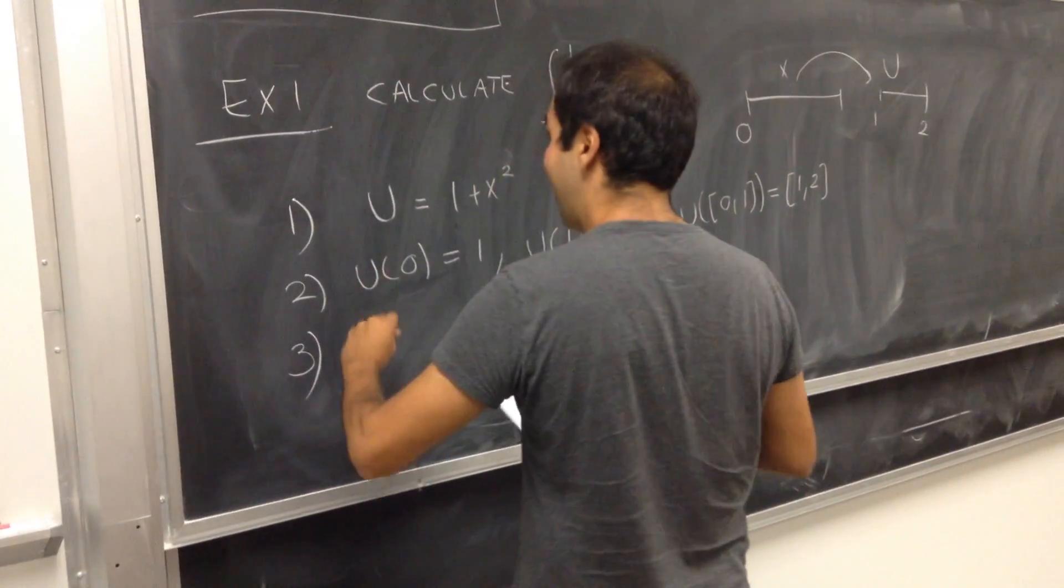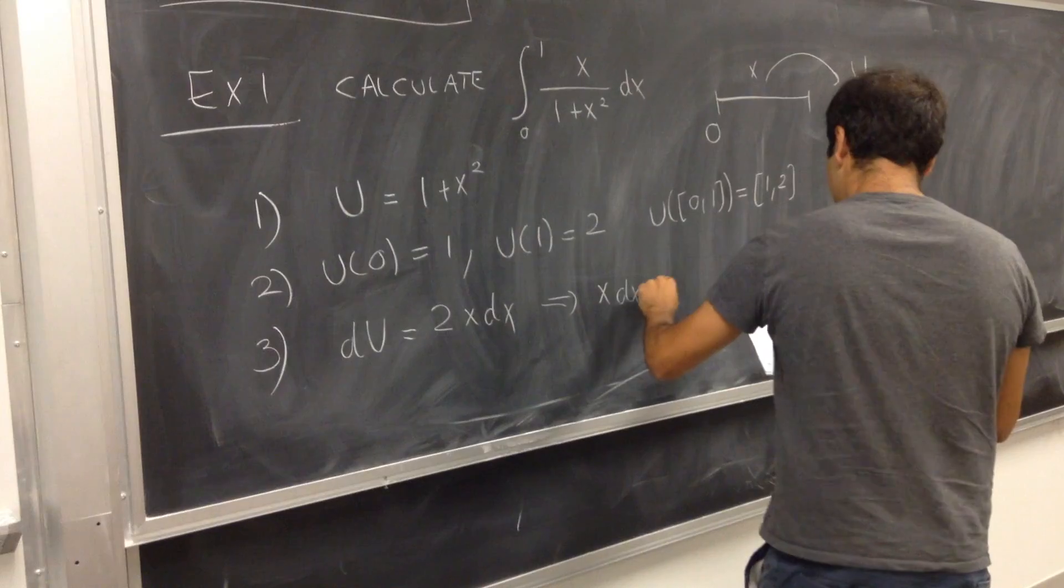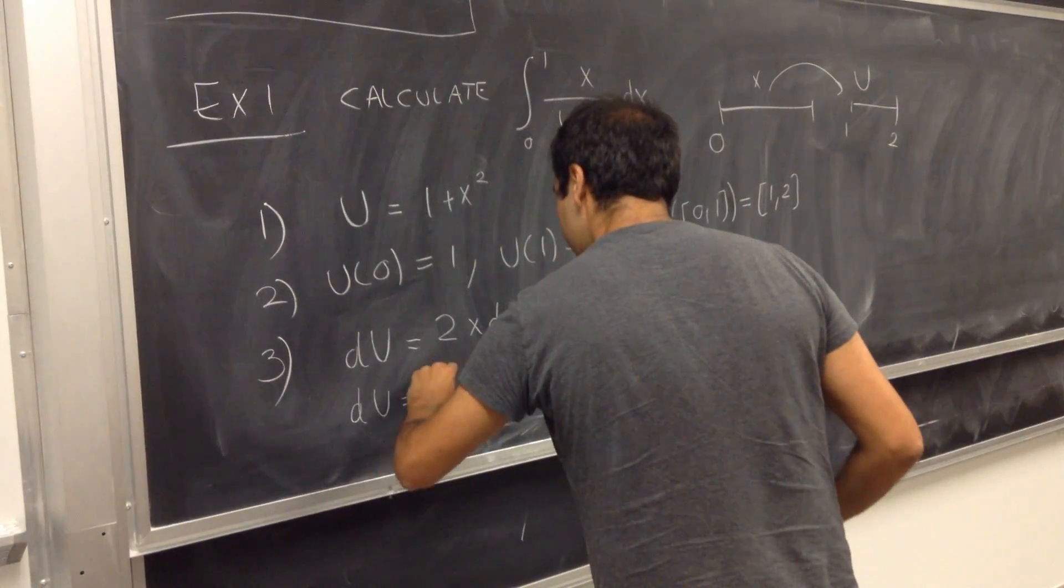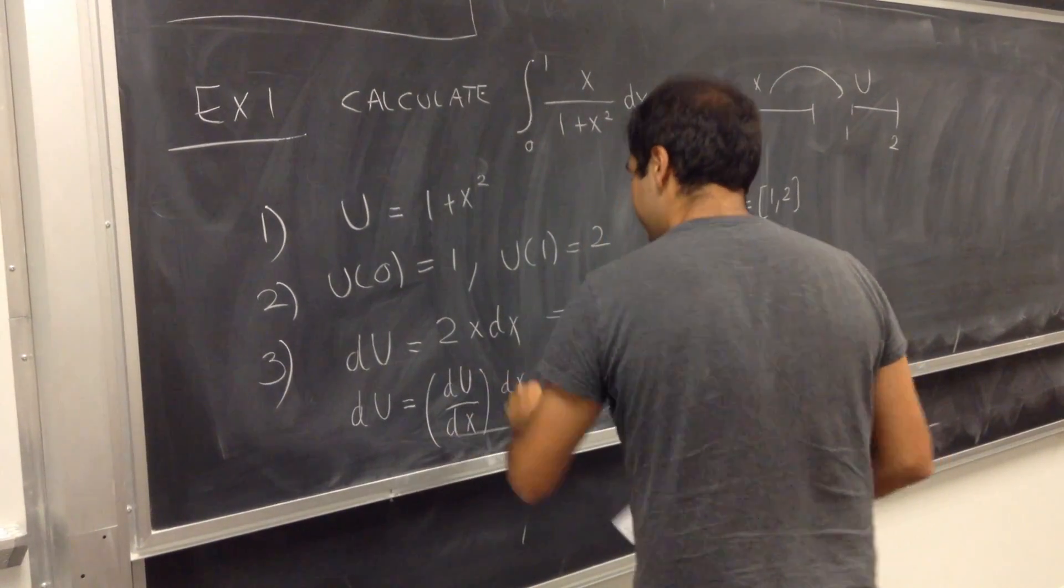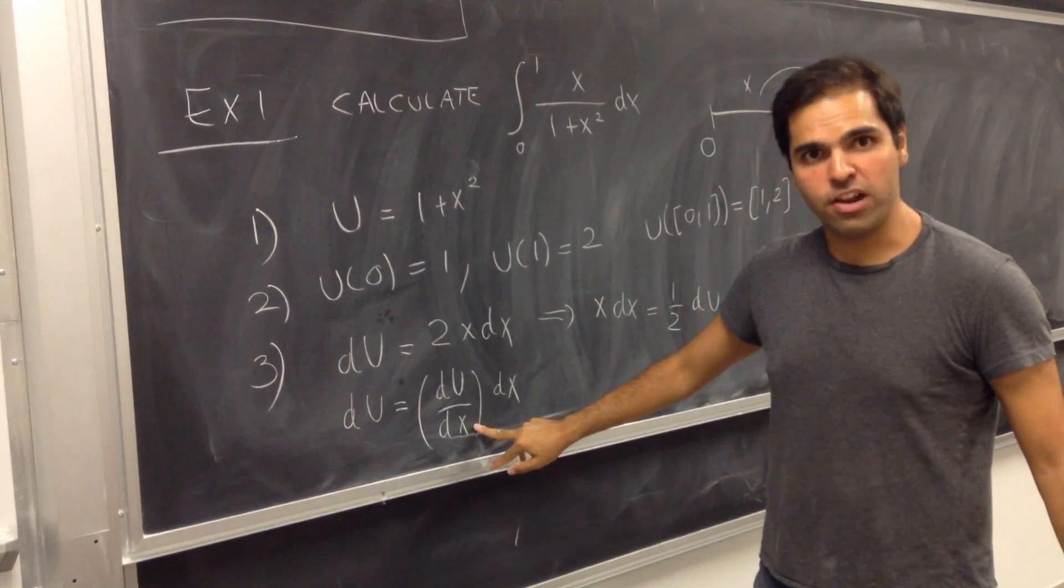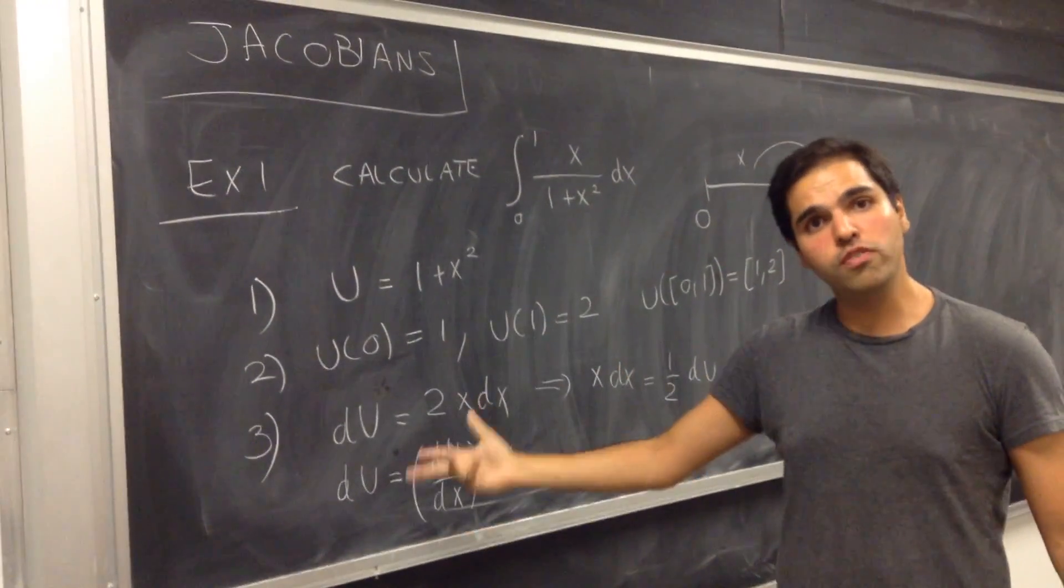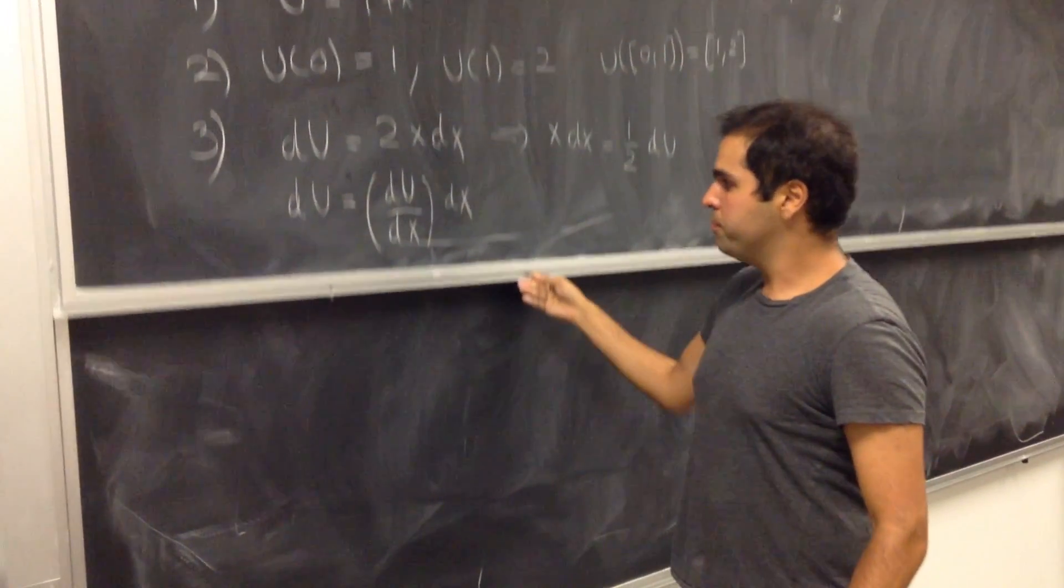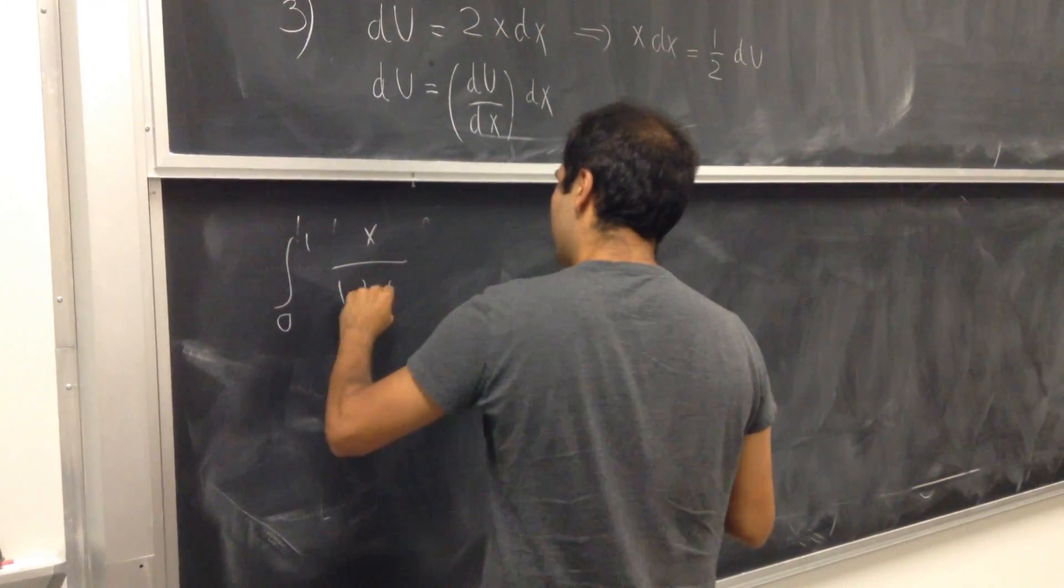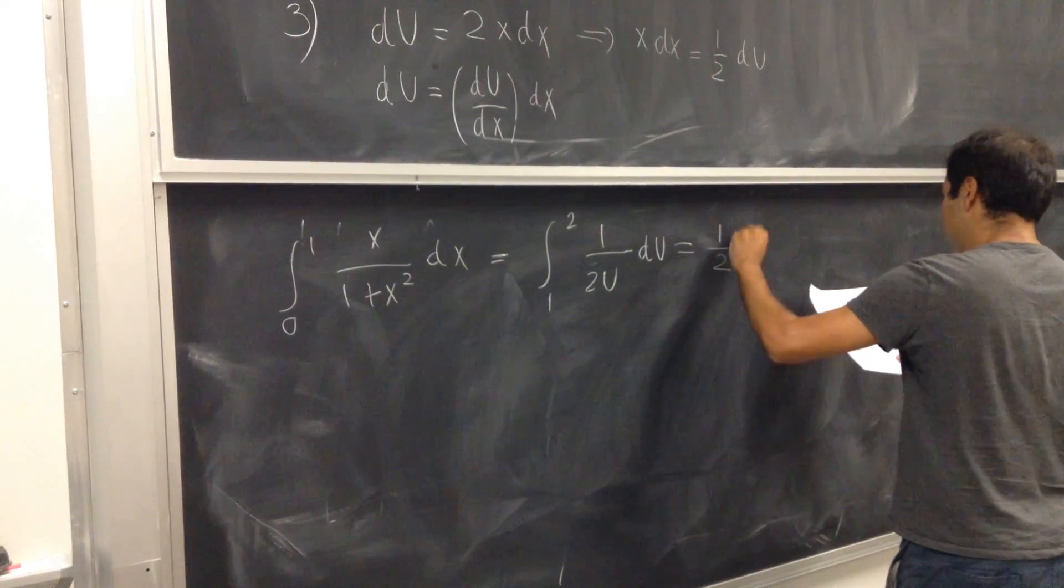Lastly, we need to calculate this du. So du is 2x dx. So the thing that we have here, x dx is 1 half du. So most importantly, look at this formula. We find really that du is du over dx times dx. In other words, you take your new variable u, which is 1 plus x squared, and you differentiate it with respect to the old variable x. That's why you get du over dx, and you will see for multivariable Jacobians, it will be always the same. You will always take the new variables and calculate them in terms of the old variables. That's one thing, and then our integral becomes nice and happy. You know, integral from 0 to 1, x over 1 plus x squared dx becomes integral from 1 to 2, 1 over 2u du, and you can calculate it to be 1 half ln of 2.